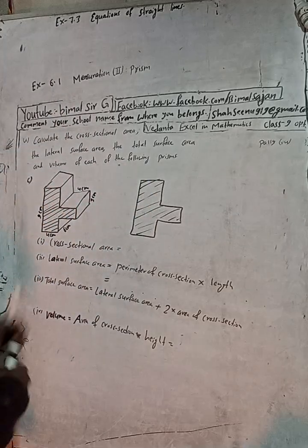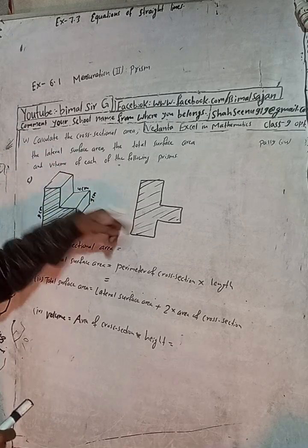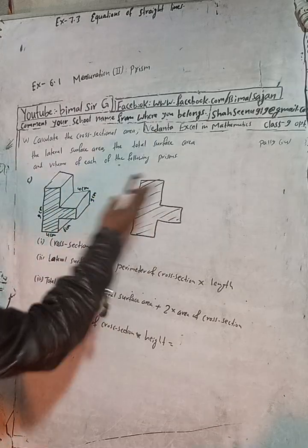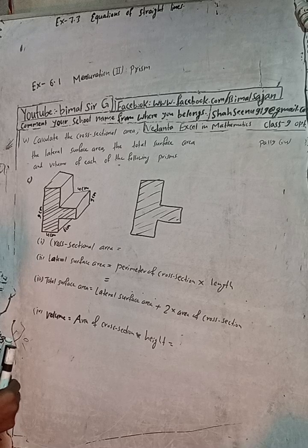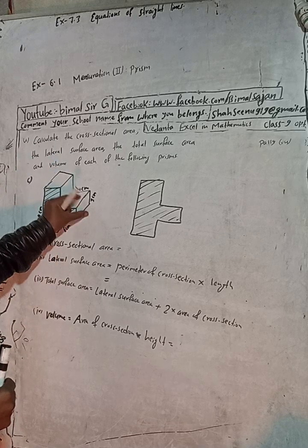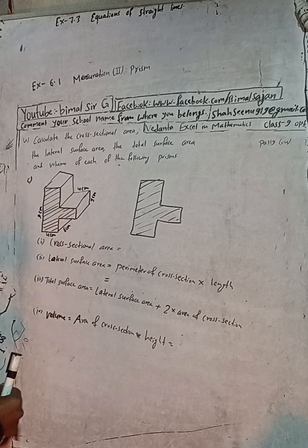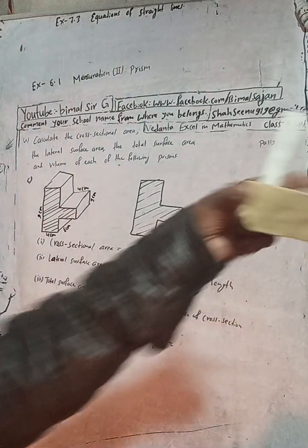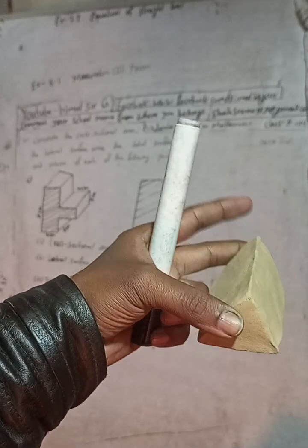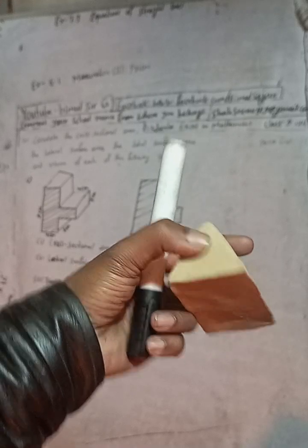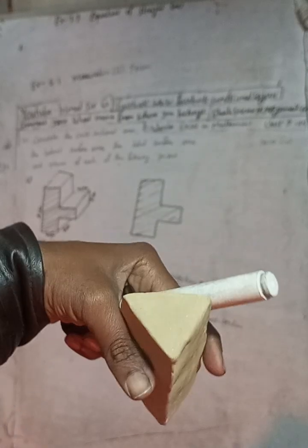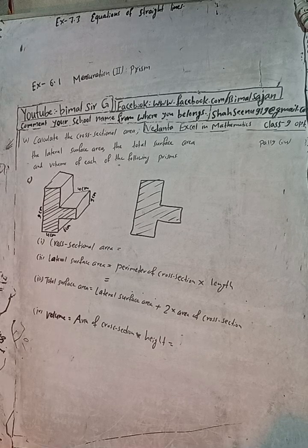This is the cross-sectional area. It is a triangle shape — this is a triangle shape. The area of the cross-section is based on a formula. The formula will be used to calculate the area.